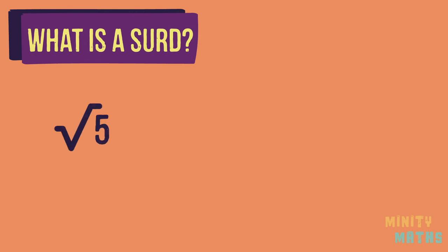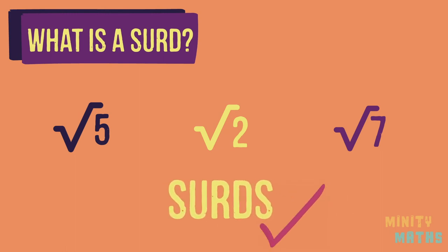These are surds as we end up with never ending decimal numbers with no repeating pattern. We cannot practically write these exact numbers out.